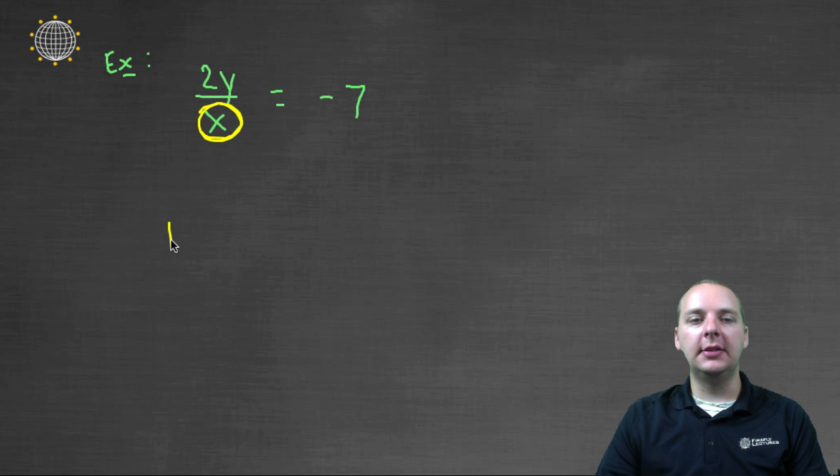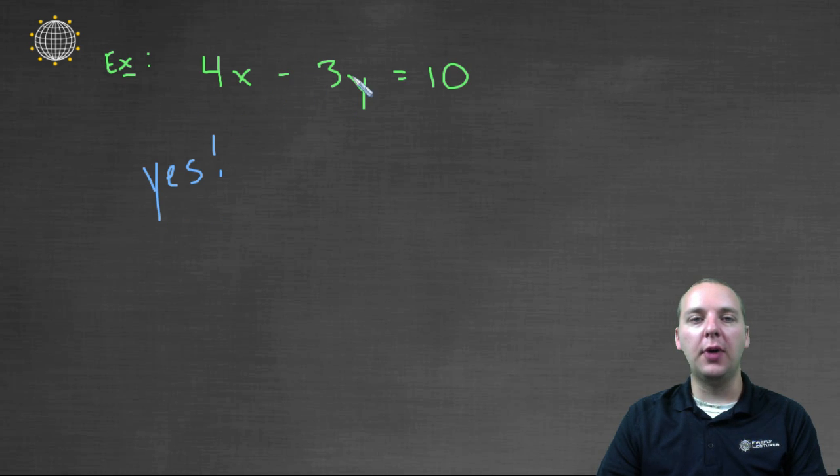So that means that this is a no. This is a non-linear equation. On the previous page, if you graph this, it would look like a straight line. That's why we call these linear equations.